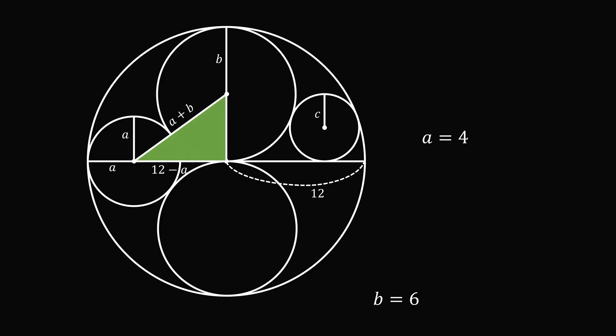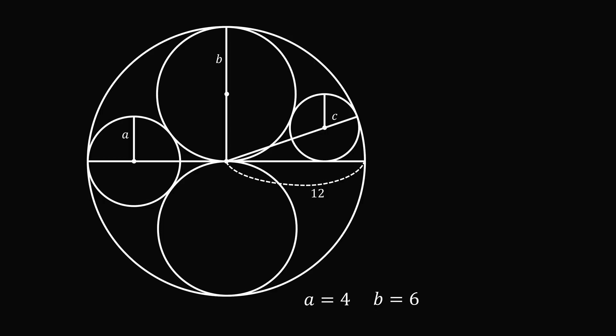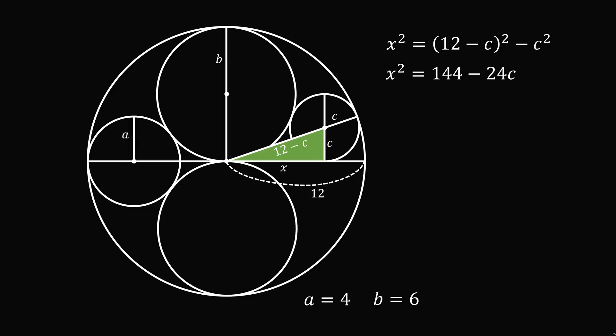Now let's work out the value of c. We will first construct the following radius of the large circle, which has length equal to 12. Next, construct this radius, which has length equal to c. We have a right triangle here, where one leg is equal to c. The hypotenuse will be the radius of the large circle minus the radius of the small circle, so its length will be equal to 12 minus c. Let the length of the other leg be equal to x. Since we have a right triangle, x squared is equal to the square of (12 minus c) minus c squared. We can simplify this to get x squared is equal to 144 minus 24c.